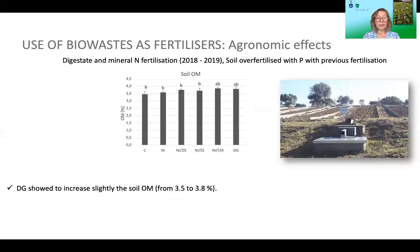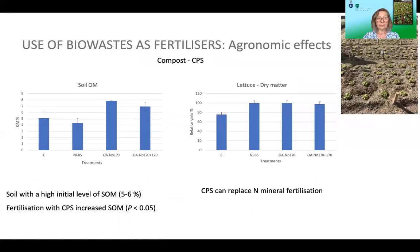Digestate did, however, show a slight increase in soil organic matter content. In another field experiment with a horticultural crop — lettuce — using compost from pig slurry in a soil with high nutrient and organic matter levels, the compost increased soil organic matter and was able to replace mineral nitrogen fertilization of lettuce.